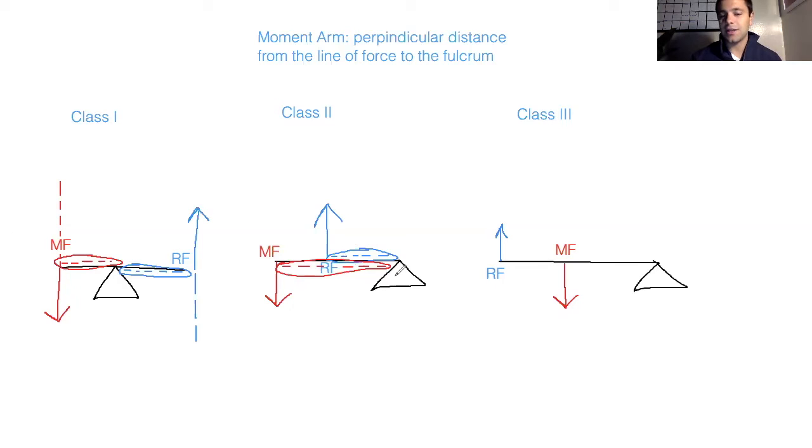And we can see here with the second class lever that the muscle force is farthest from the fulcrum. So the orientation would be muscle force, resistive force, then fulcrum, with resistive force being in the middle.